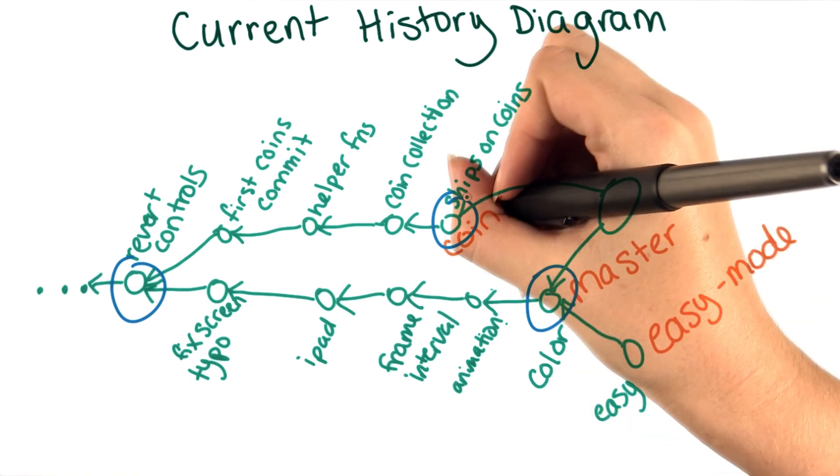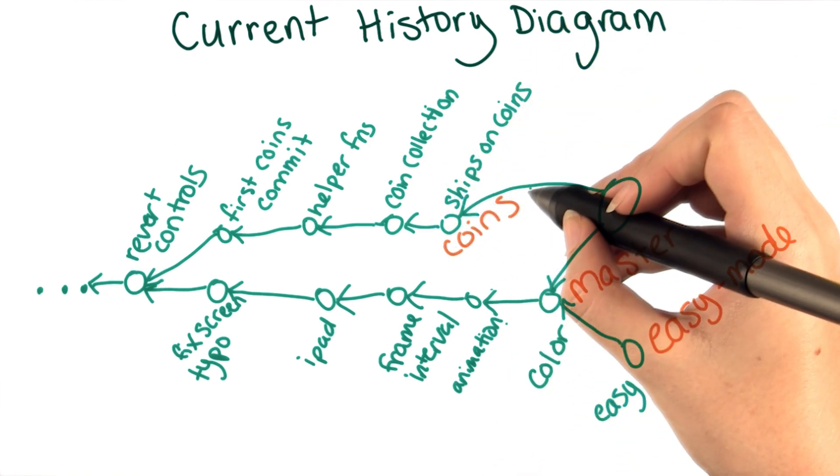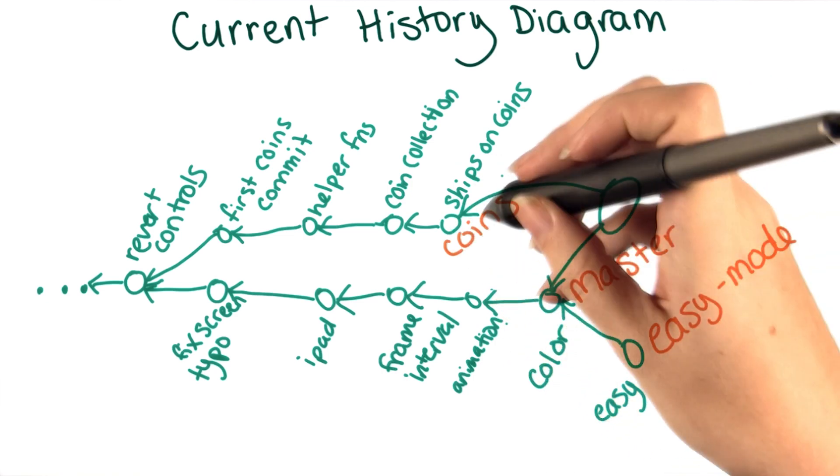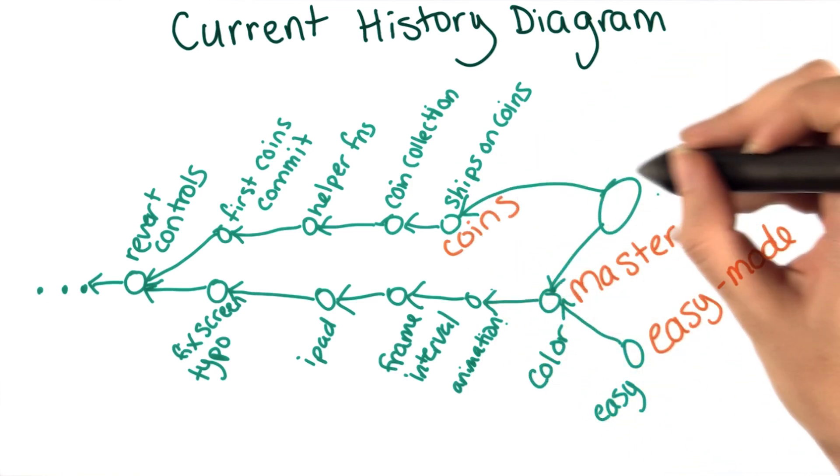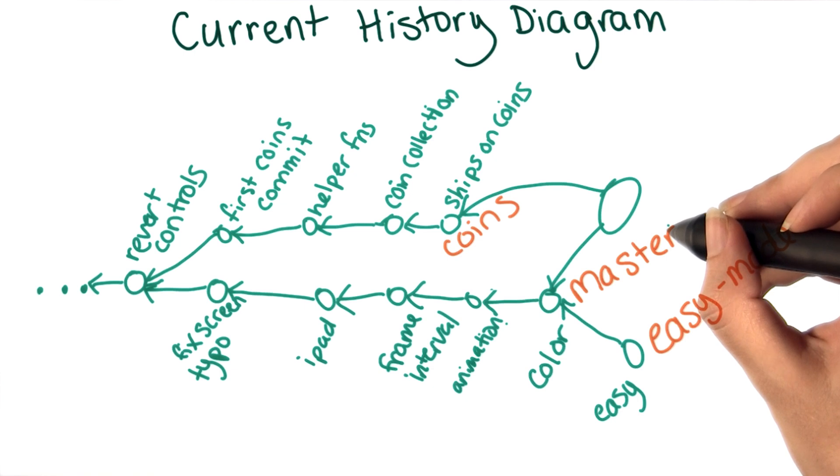So I'll add arrows to both. Since the goal of this merge is to get the content from the coins branch into the master branch, I'm going to want this new commit to be the new tip of the master branch.